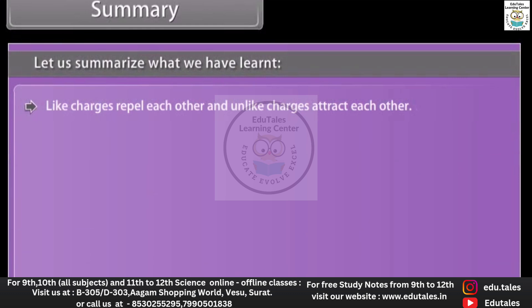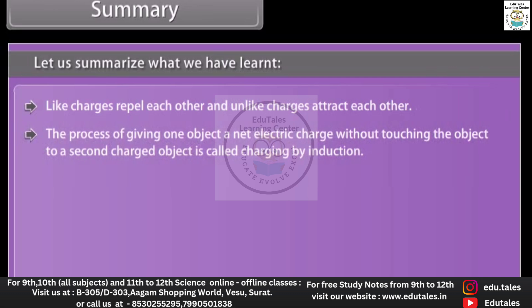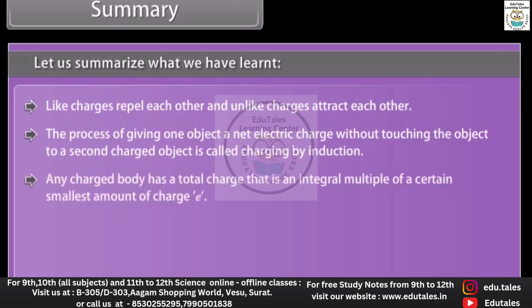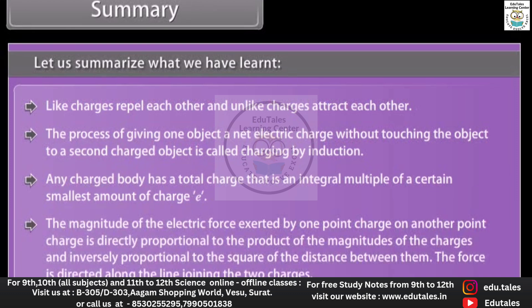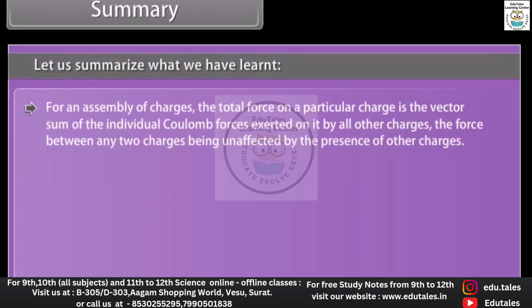Summary: like charges repel each other and unlike charges attract each other. The process of giving one object a net electric charge without touching it to a second charged object is called charging by induction. Any charged body has a total charge that is an integral multiple of a certain smallest amount of charge e. The magnitude of the electric force exerted by one point charge on another is directly proportional to the product of the magnitudes of the charges and inversely proportional to the square of the distance between them, directed along the line joining the two charges. For an assembly of charges, the total force on a particular charge is the vector sum of the individual Coulomb forces exerted on it by all other charges, unaffected by the presence of other charges.